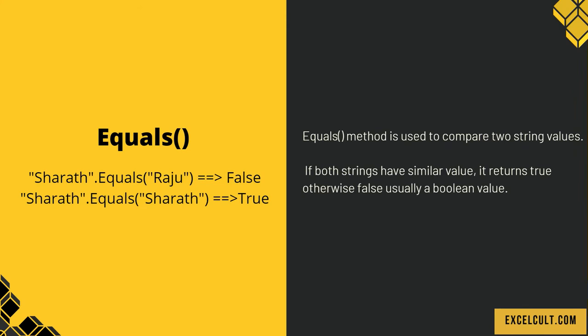Equals. The equals method is used to compare two string values. If both strings have similar values, this function will return true, otherwise false — a boolean value. On the left side we have two examples: comparing 'Sherath' with 'Raju' returns false, and comparing 'Sherath' with 'Sherath' turns out to be true.